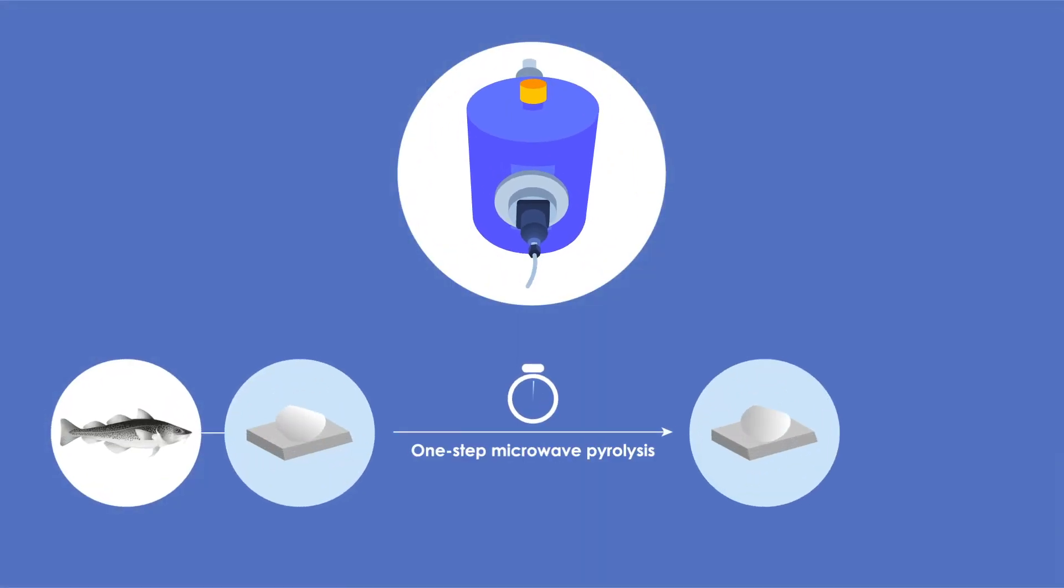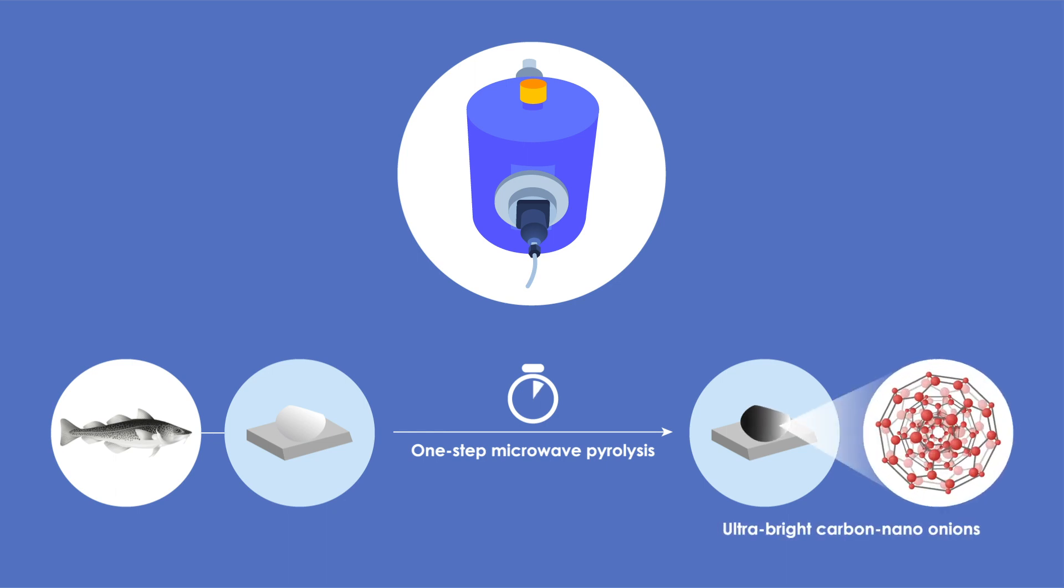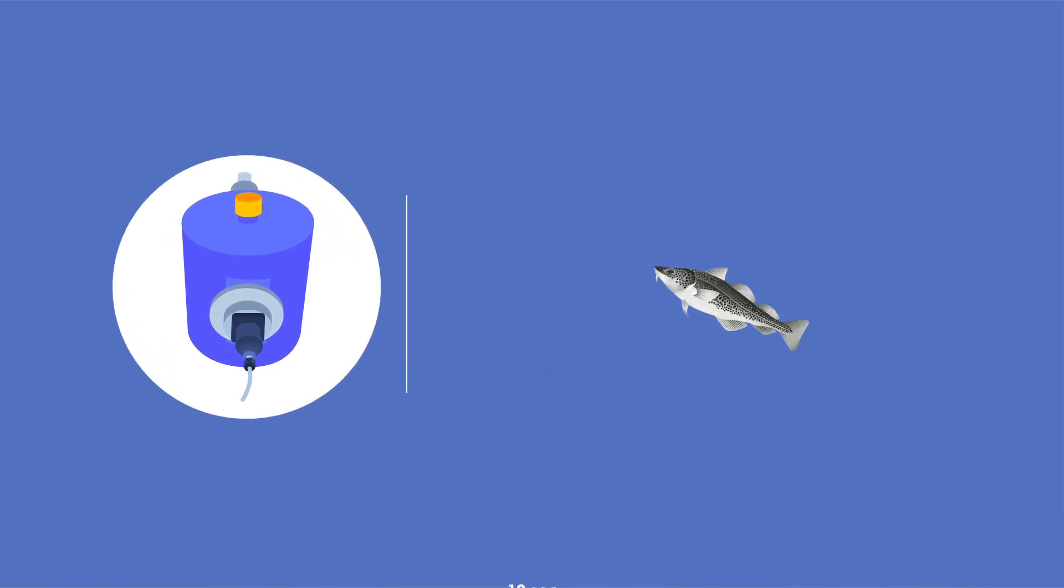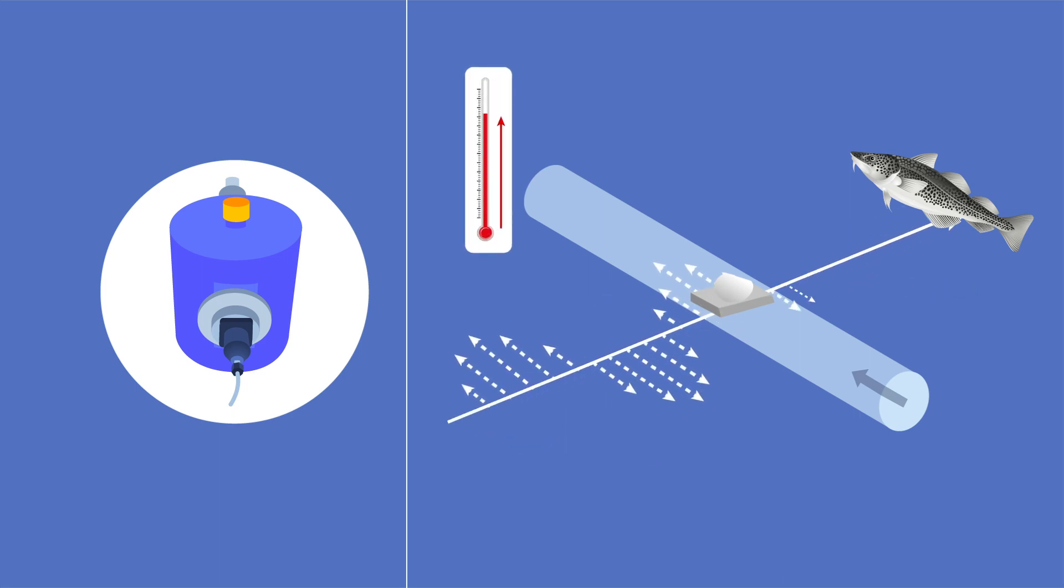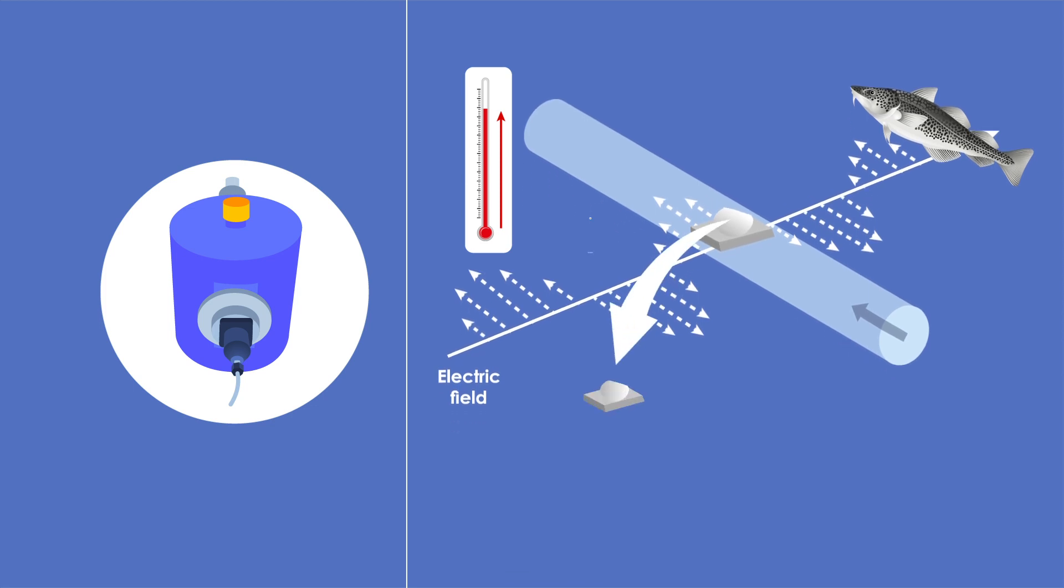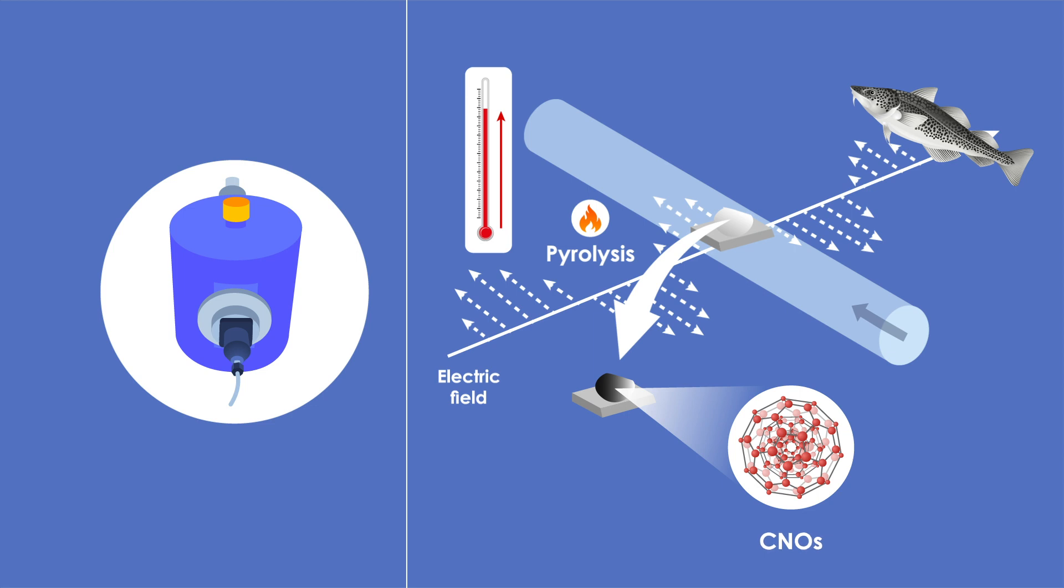A one-step microwave pyrolysis method can synthesize ultra-bright carbon nano-onions from fish scales within 10 seconds. The team harnessed the microwave absorption ability of fish collagen to rapidly increase the temperature in the local electric field of the microwave. This initiated the pyrolysis process for obtaining the CNOs while simultaneously functionalizing them, a procedure that was until now done separately after CNO synthesis.